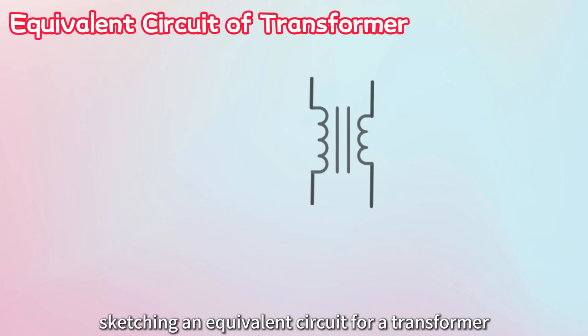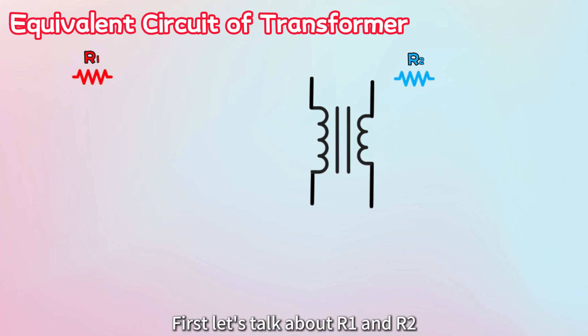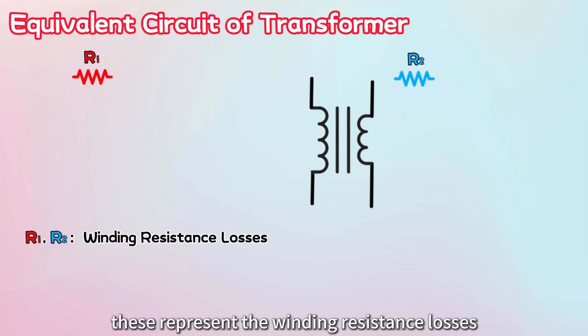Let's begin by sketching an equivalent circuit for a transformer. First let's talk about R1 and R2. These represent the winding resistance losses. Every wire has some inherent resistance, which leads to energy loss through heat when current flows.